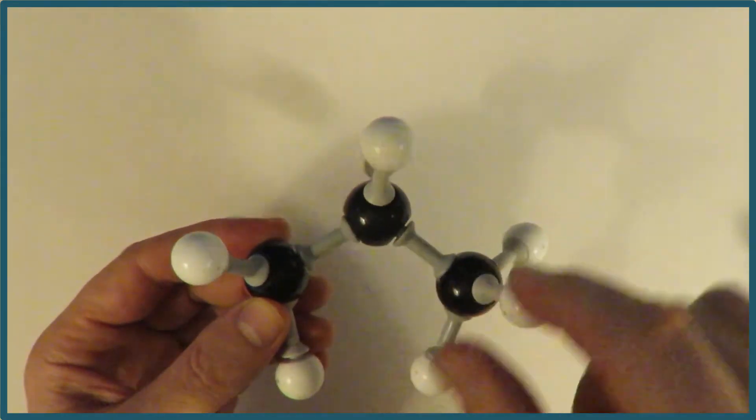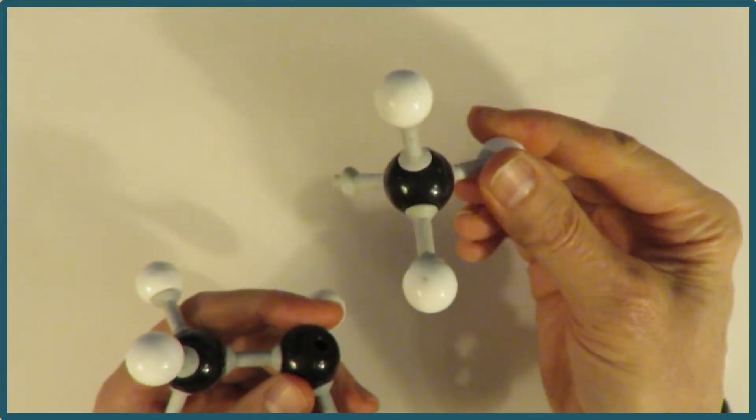So we have 1, 2, 3, and we're going to take the second hydrogen off, and we're going to replace it with a methyl group. That's CH3.